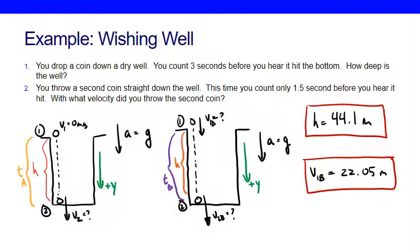In this example, we were able to look at a situation involving free fall motion and use one-dimensional kinematics to find the height of the well and the initial speed of the coin. In this problem we only ever used one of the kinematic equations, but if the problem had been more complicated we may have had to use different equations, or possibly two equations at a time. If you have any questions, you can come talk to me or ask me during class. Thank you very much.